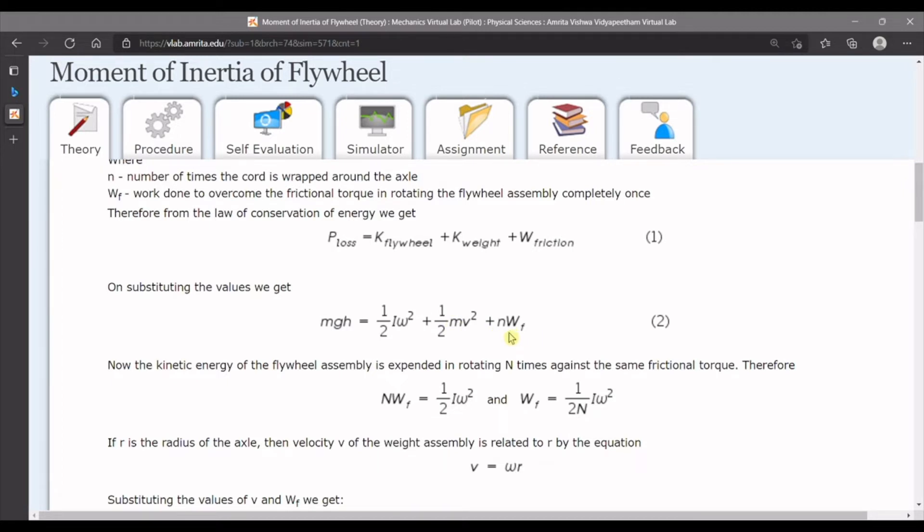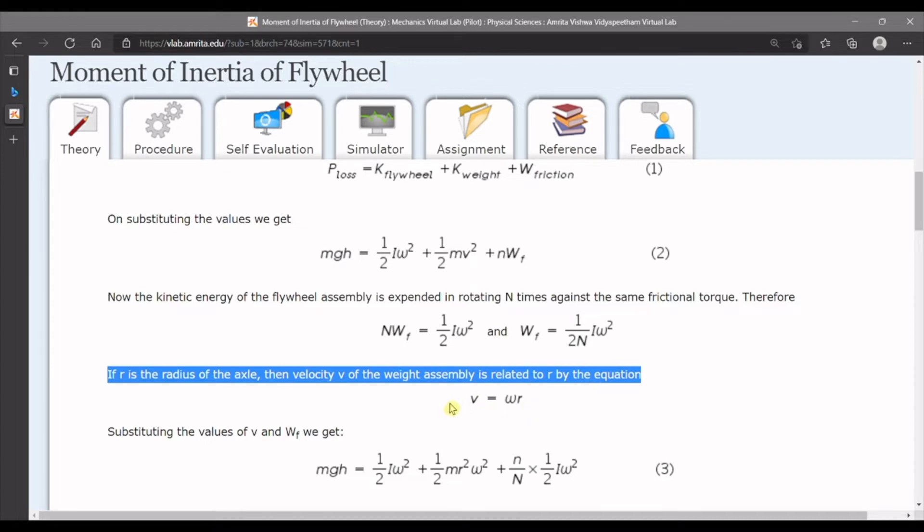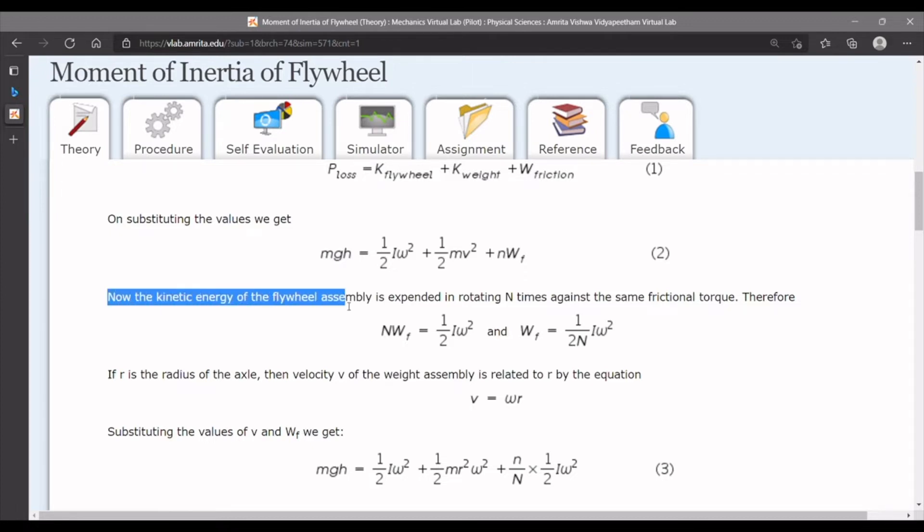After this portion, we combine the kinetic and rotational energy using the formula v equals r omega. We can write the rotational energy half I omega square in terms of total work done by friction and the number of rotations of flywheel before it stopped.